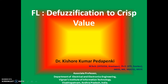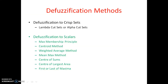There are two types of defuzzification methods: one is defuzzification to crisp sets, and the second one is defuzzification to scalars or crisp value. In defuzzification to crisp value there are seven methods: max membership principle, centroid method, weighted average method, mean max method, center of sums method, center of largest area, and first or last maxima.